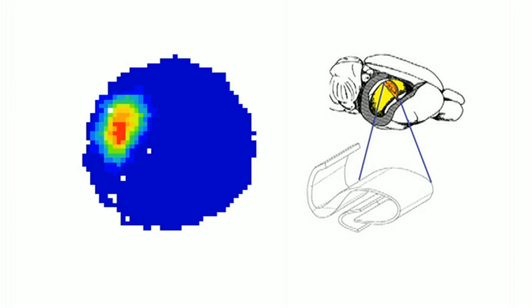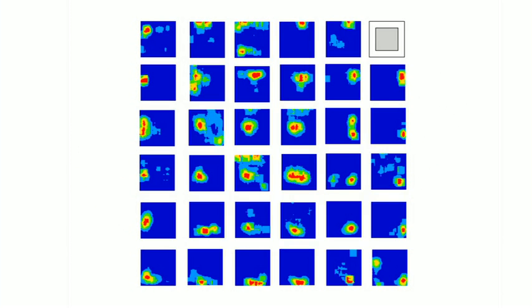We could show the firing rate of that neuron as a function of the animal's location. And if we record from lots of different neurons, we'll see that different neurons fire when the animal goes into different parts of its environment, like in this square box shown here. So together they form a map for the rest of the brain, telling the brain continually where am I now within my environment.